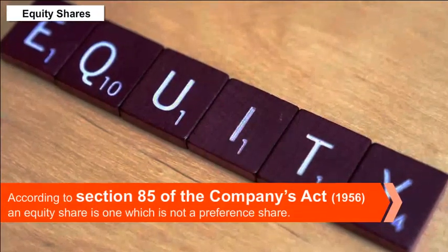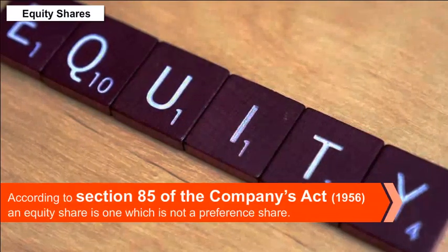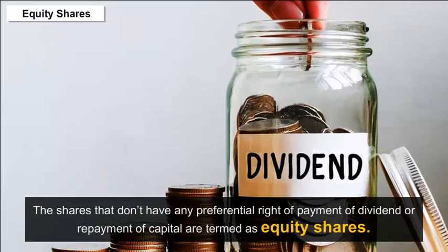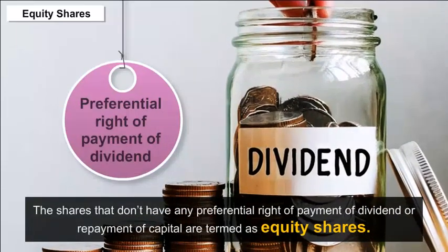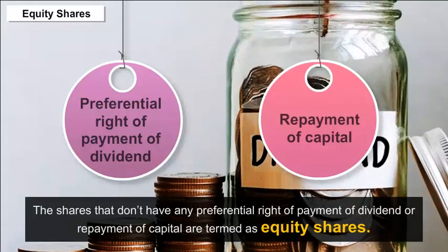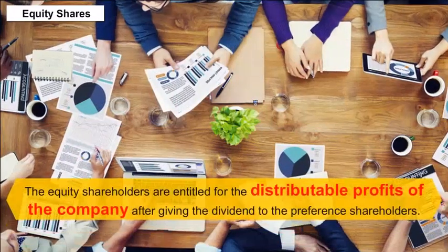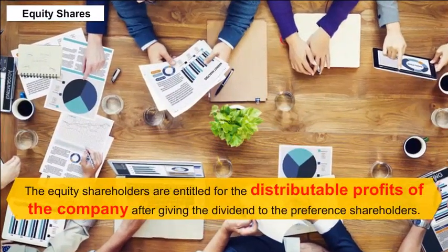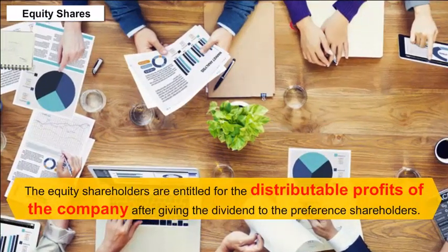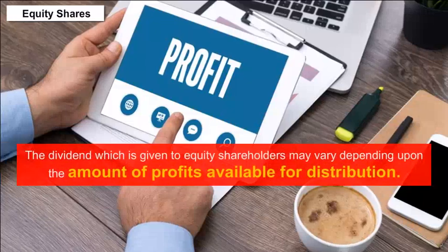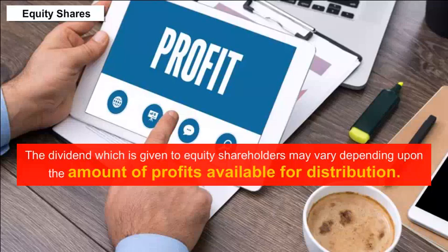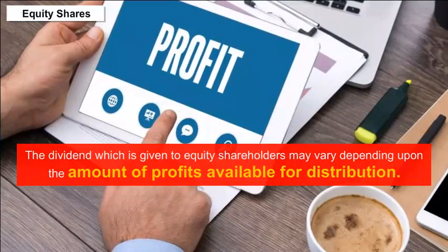Equity Shares: According to section 85 of the Companies Act, an equity share is one which is not a preference share. Shares that don't have any preferential right of payment of dividend or repayment of capital are termed as equity shares. Equity shareholders are entitled to the distributable profits after giving dividend to preference shareholders, and the dividend given to equity shareholders may vary depending upon the amount of profits available for distribution.